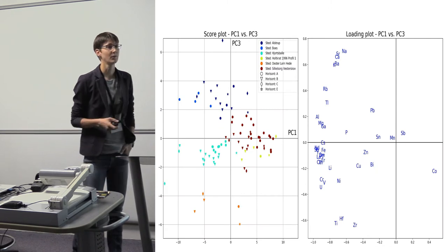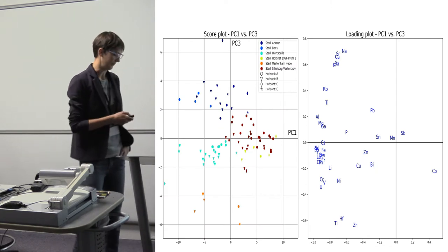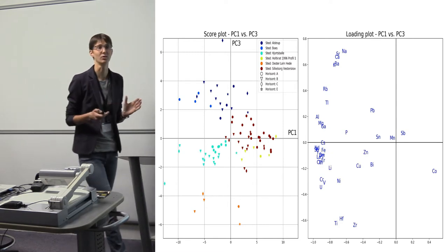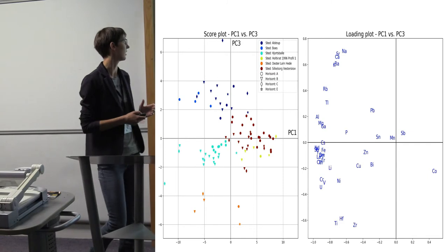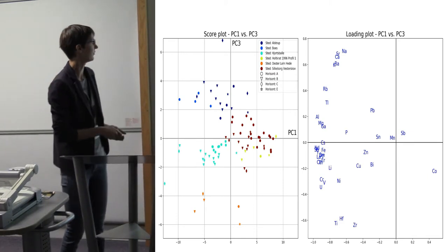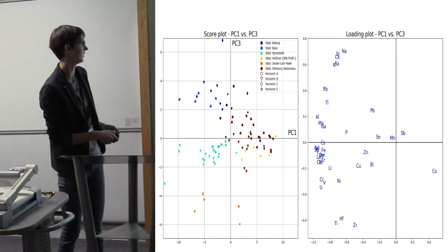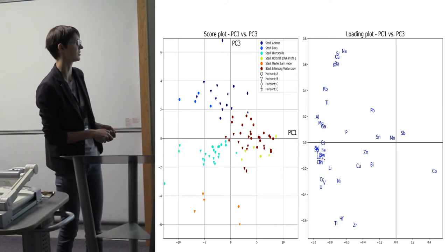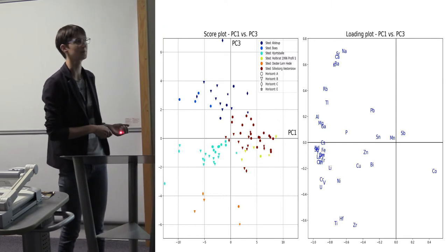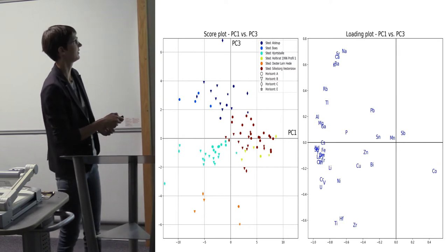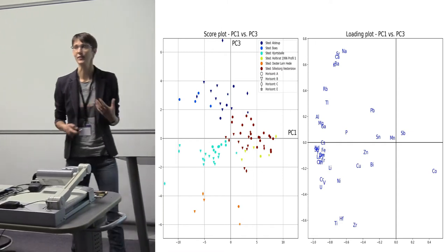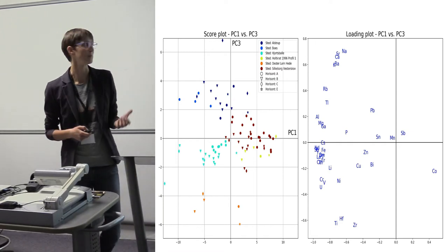If we plot PC1 versus PC3, we can see these two principal components combined reflect the local soil conditions—probably the parent material and texture. Down here you have elements related to very resistant minerals, so probably some influence by quartz sand, and up here you have elements related to easily weathered minerals like the feldspars.